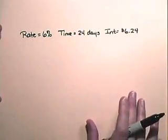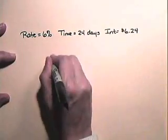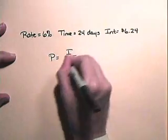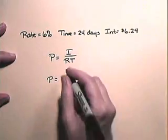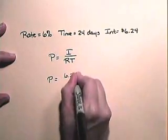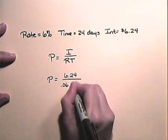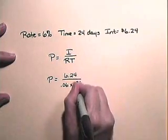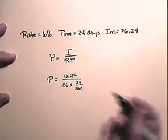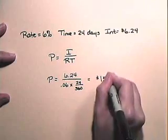Now we will do an exercise in which we find the principle. If the rate is 6%, the time is 24 days, and the interest is $6.24, then the principle equals interest divided by rate times time. So the principle is $6.24 divided by 6% times 24 days out of 360, using ordinary interest. The principle is $1,560.